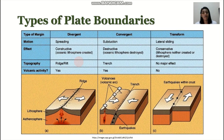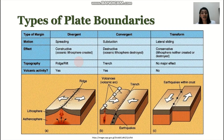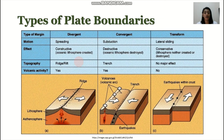For the last type — transform boundaries — this is simply the lateral sliding of your plates. It is conservative, meaning there is no creation or destruction of the lithosphere or crust. What is formed here are fault lines. There is no volcanic activity at transform boundaries, but you do have earthquakes.